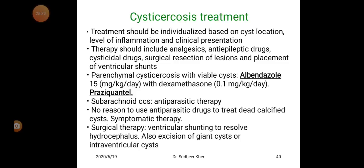Cysticercosis treatment should be individualized based on cyst location, level of inflammation, and clinical presentation. Therapy should include analgesics, anti-epileptic drugs, cysticidal drugs, surgical resection of lesions, and placement of ventricular shunts. For parenchymal cysticercosis with viable cysts, albendazole 15 mg with dexamethasone or praziquantel is the drug of choice. There is no reason to use anti-parasitic drugs to treat dead calcified cysts. Surgical therapy includes ventricular shunting to resolve hydrocephalus and excision of giant or intraventricular cysts.